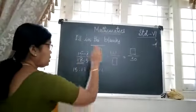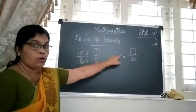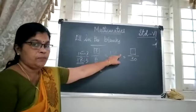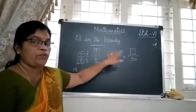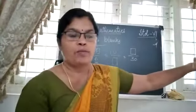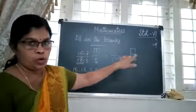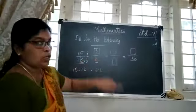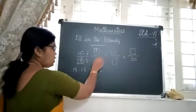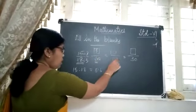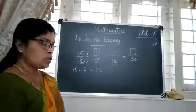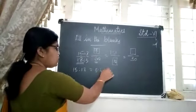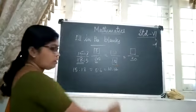Again, we have 10 divided by 6. Here we got 5 and the next numerator is 10. How do we get 10? Five into 2 gives us 10, so we multiply by 2 in the numerator. The same thing we do in the denominator: 6 multiplied by 2 gives 12. So the fraction we get here is 10 by 12. This ratio is equal to 10 is to 12.